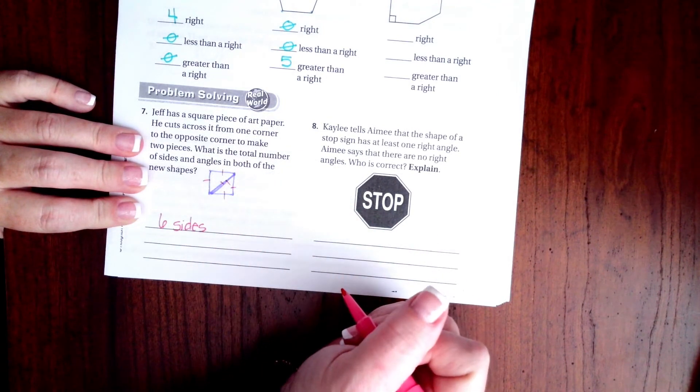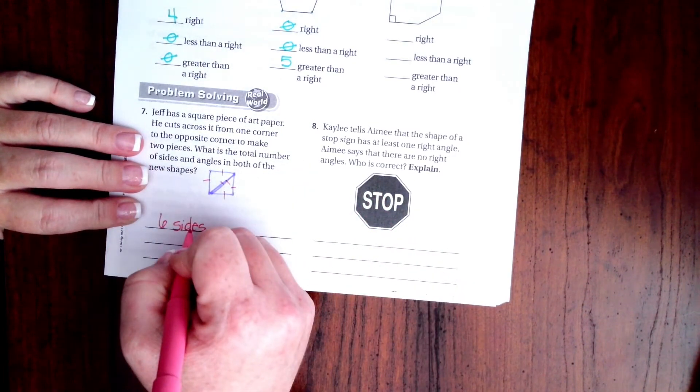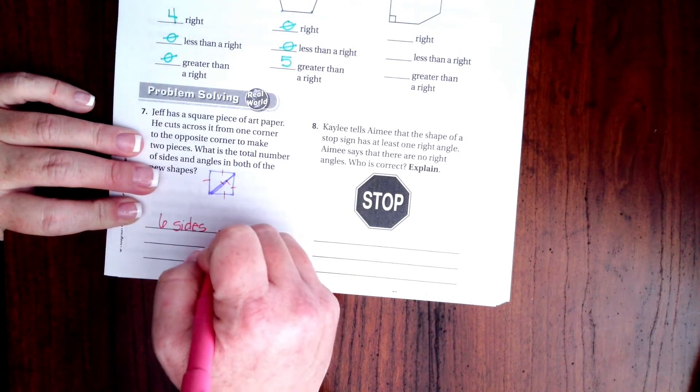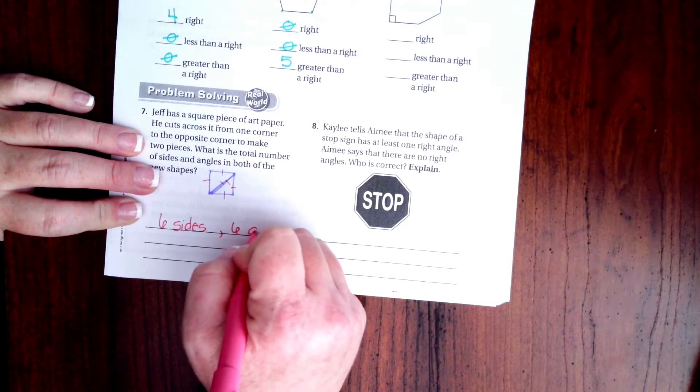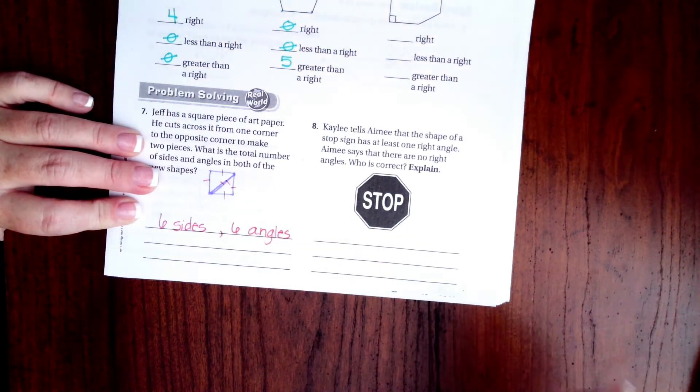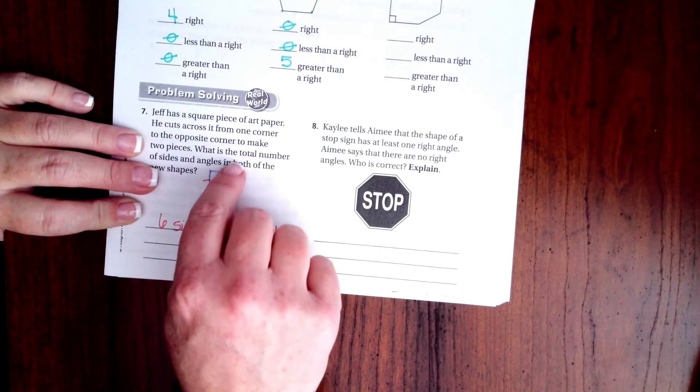Hold on, they just want to know how many angles. So if it has six sides, you have the same amount of angles that you have sides. Six sides means six angles. It actually doesn't want to know what kind of angles, but they would all be two 90 degrees and then two that are smaller on each one.